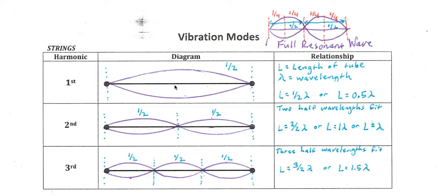We're going to take a look at vibration modes and standing waves. Basically, what a standing wave is — it's a wave that gets trapped, or at least pieces of waves, that get trapped within a confined space. As an example, we could think of this first harmonic, and we'll define what a harmonic is in just a moment.